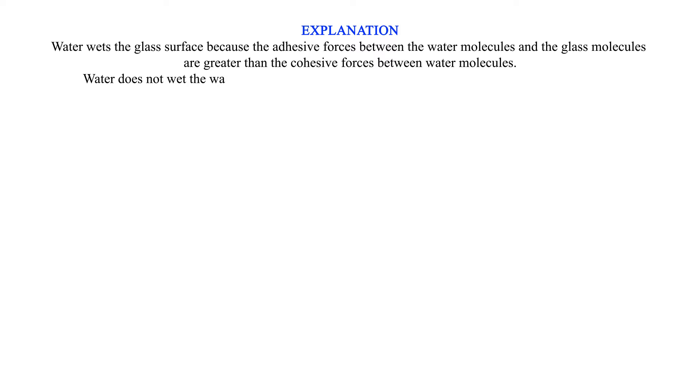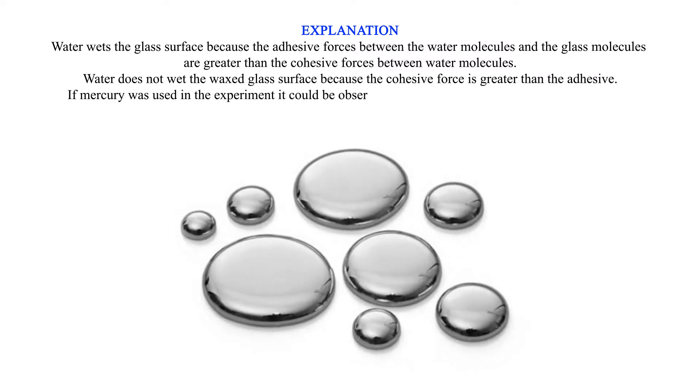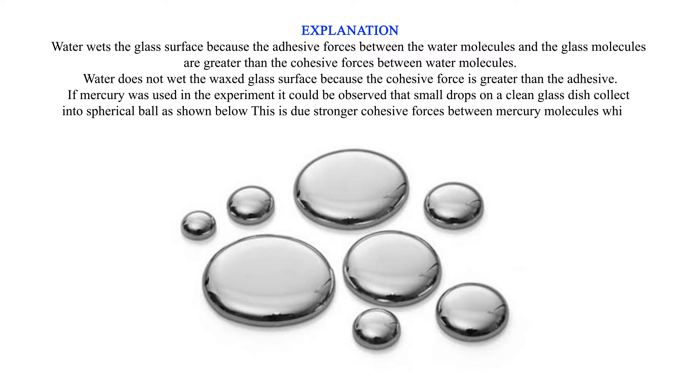Water does not wet the waxed glass surface because the cohesive force is greater than the adhesive. If mercury was used in the experiment, it could be observed that small drops on a clean glass dish collect into spherical balls. This is due to stronger cohesive forces between mercury molecules which form small spherical drops. The adhesive force between mercury and glass makes mercury not wet glass.